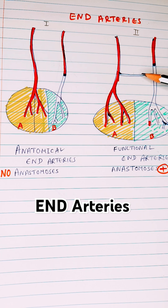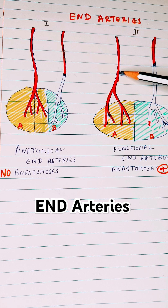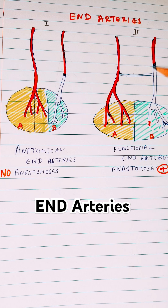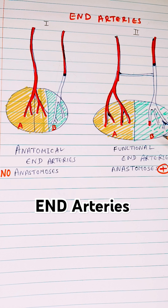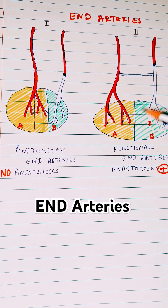Whenever there is a blockage, this collateral will try to pass some blood from the other vessel to the affected area, but it cannot fully compensate for the blood supply that was provided by the blocked vessel. The example for functional end arteries is the coronary arteries. That's why even when a heart attack happens, despite some collaterals between blood vessels, they are very minimal, and the patient still suffers ischemia and myocardial infarction.